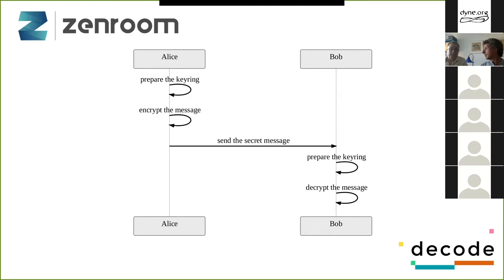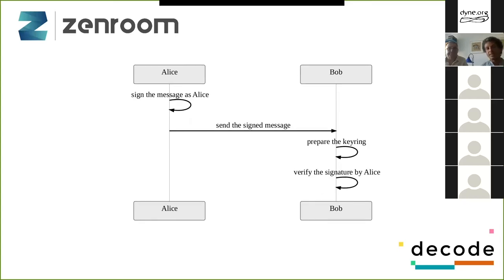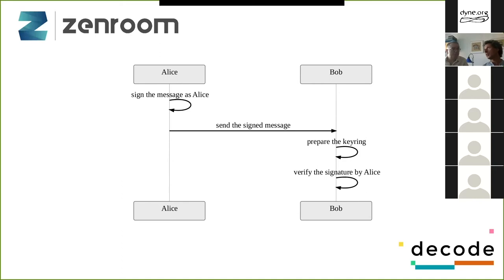The combination of someone's private key with your public key will always lead to the same result — the shared secret between you and that person — deterministically, within a scope. With this, we can send secret messages: Alice encrypts the message with her key ring, sends the secret message, and Bob decrypts it with his key ring. We can also sign messages: Alice sends a signed message and Bob can prepare the key ring and verify the signature. Signing is to integrity what encryption is to access control — you can check that the message has not been tampered with in any way. One letter change and the signature is invalid.